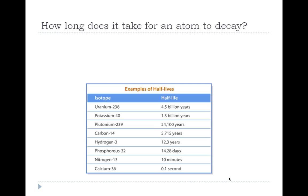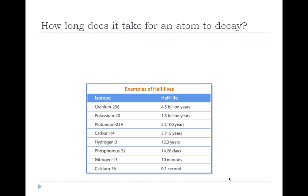So how long does it take for an atom to decay? Different elements, or I should say different isotopes more specifically, have different half-lives, and that's how much time a sample takes until half of it decays into its daughter product. It's the time required for half the atoms of the sample to decay. Different isotopes have different half-lives.